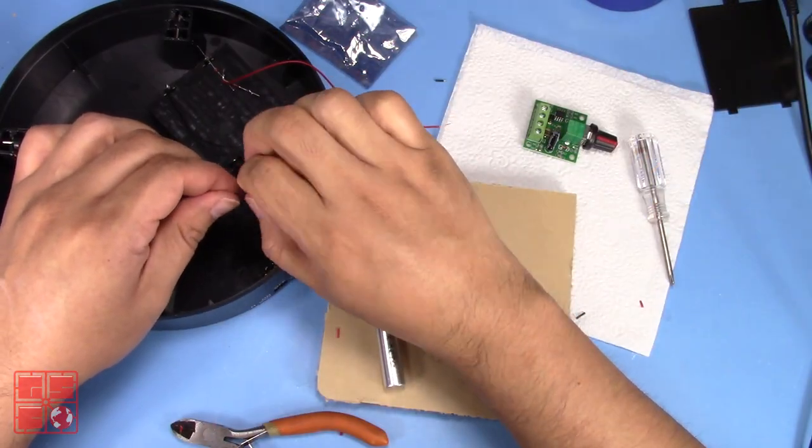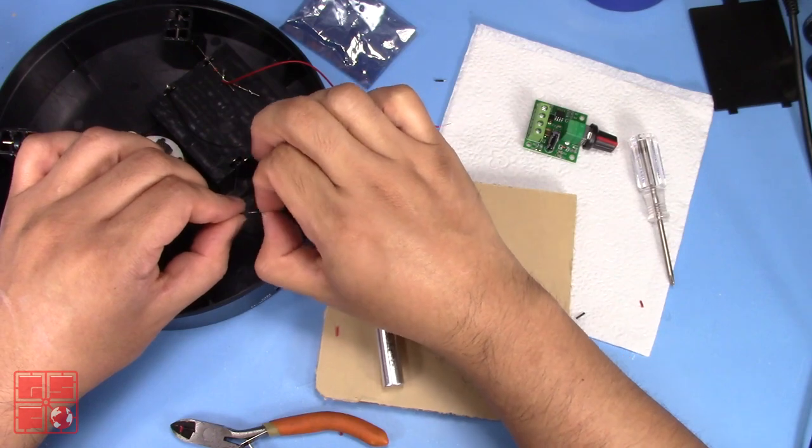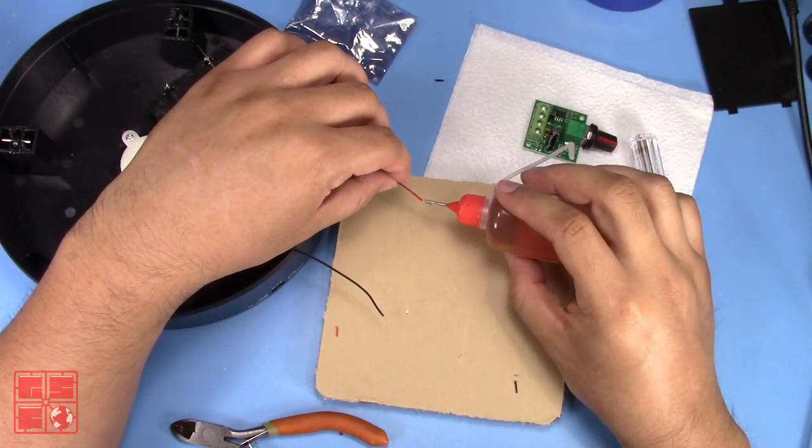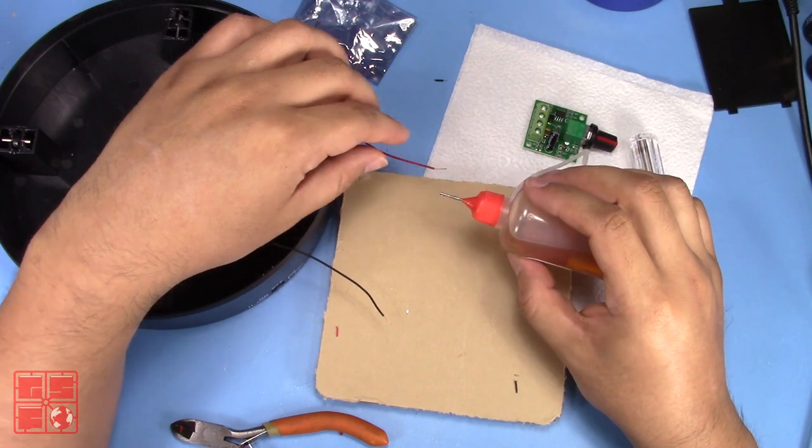Before connecting all these leads to the speed controller, I strip the leads about a quarter of an inch and then tin them using some flux and a tiny bit of solder.